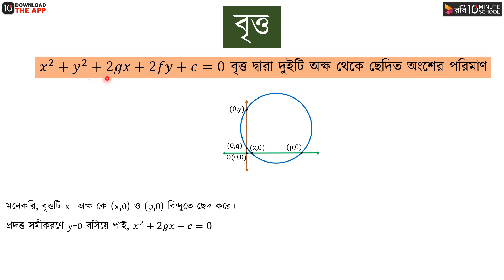When y is equal to 0, we substitute into the circle equation to find the x-intercepts. Similarly, when x is equal to 0, we find the y-intercepts.